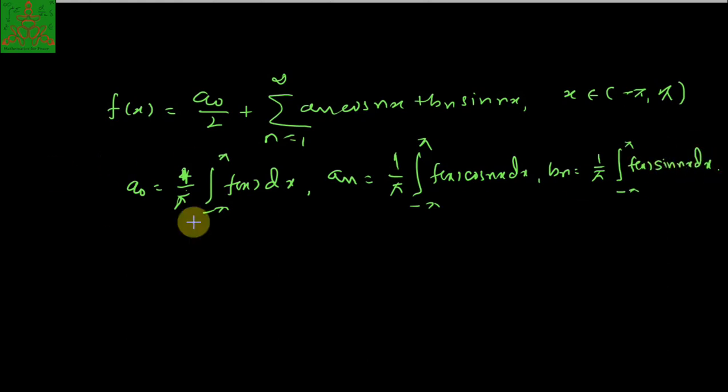Using this, we have proved Bessel's inequality which tells you that the summation n from 1 to infinity of aₙ² plus bₙ² is less than or equal to 1/π times the integral from -π to π of f(x)² dx.